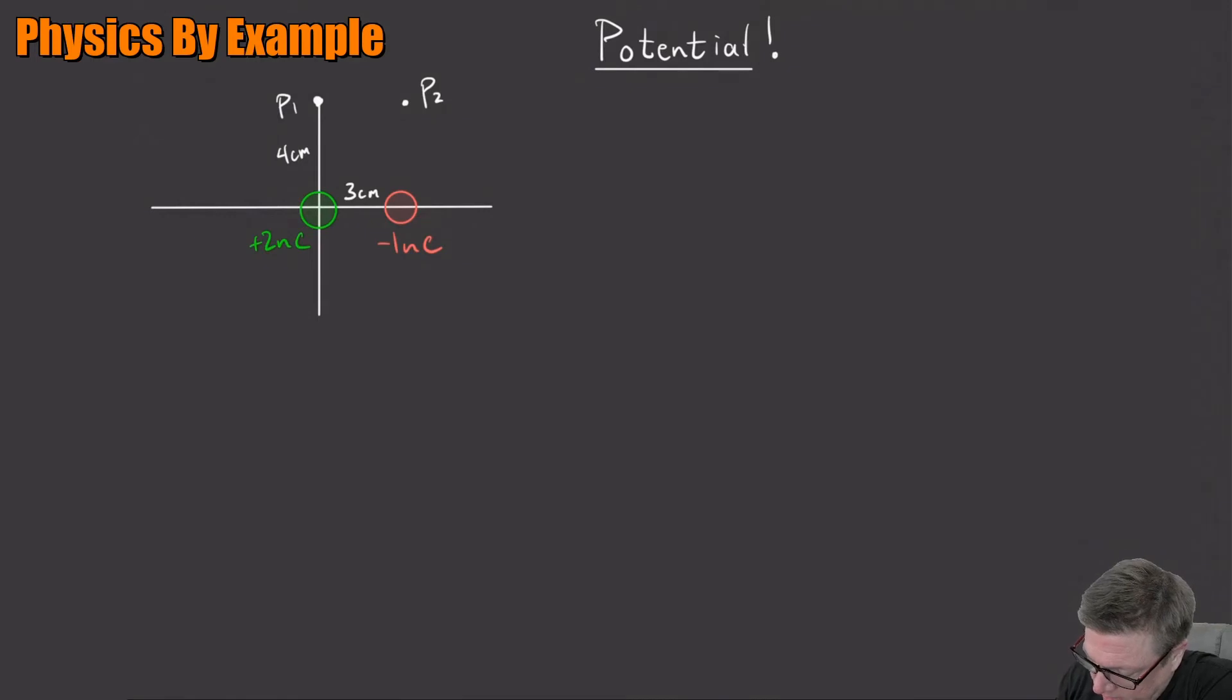So here's the way it goes. The potential at one, it's just like the electric field. We just do each one independently. So it's just going to be, remember the equation is KQ over R, right? So it's just KQ1 divided by the distance out to point one. And remember that there's no vector to this. Potential. This is all just numbers.